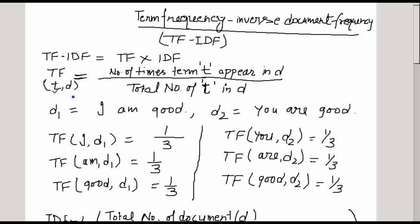Here T is the term or word and D is the document. We calculate the term frequency as the number of times the term T appears in document D divided by the total number of terms in D. For example, we have two documents: D1 is 'I am good' and D2 is 'you are good'.